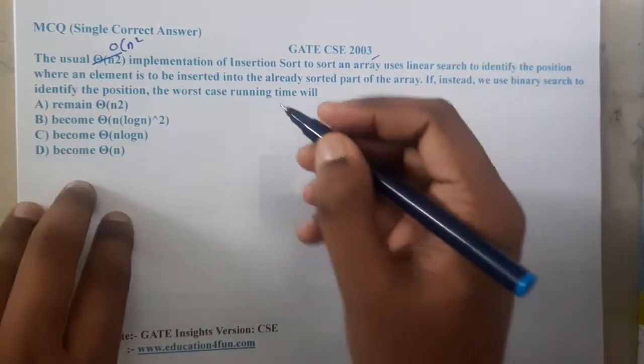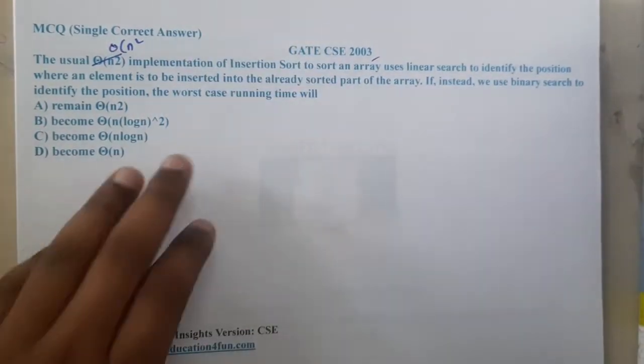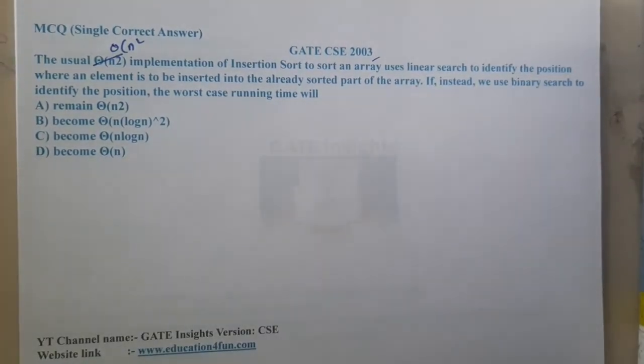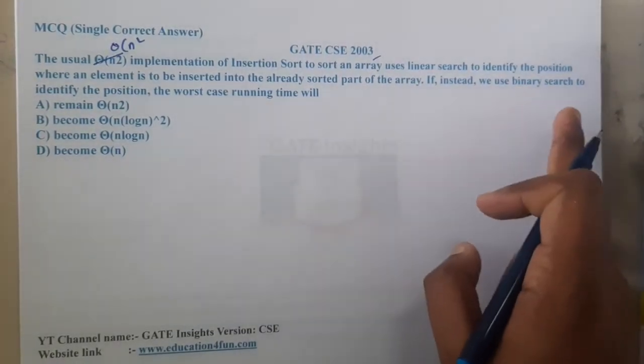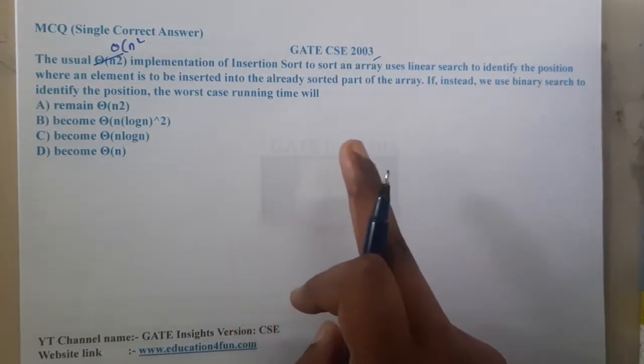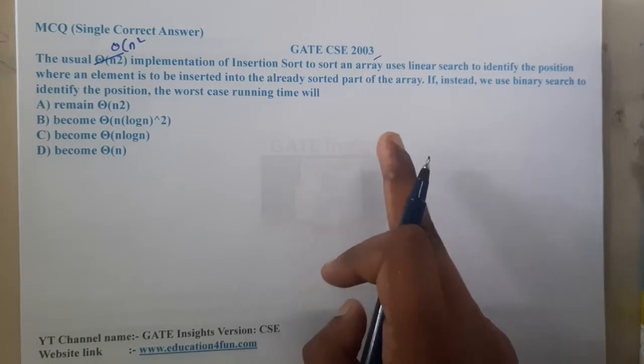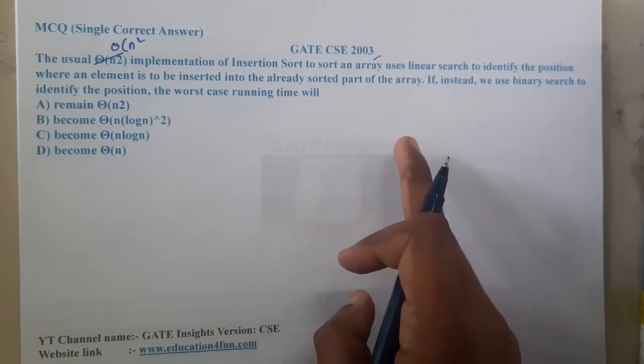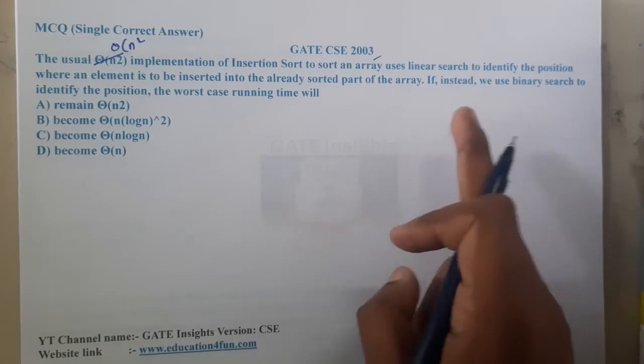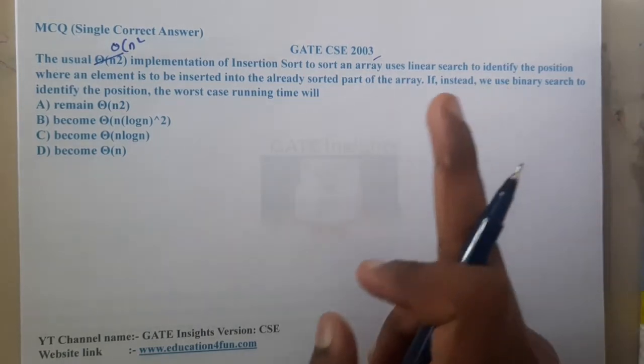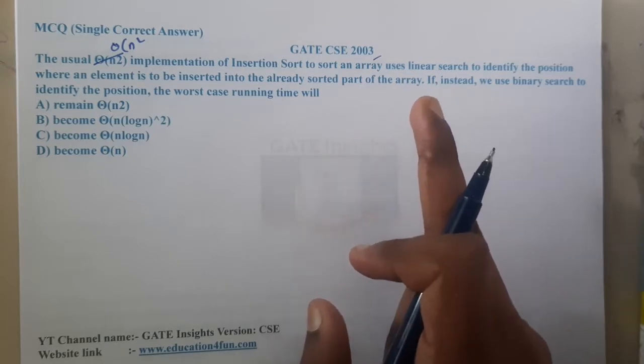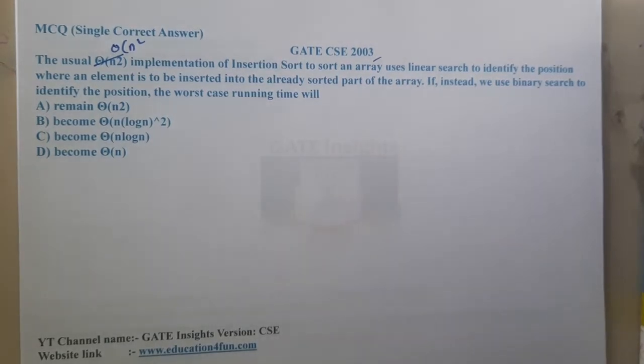So the usual theta of n square implementation of insertion sort to sort an array uses linear search to identify the position where an element is to be inserted into the already sorted part of the array. If instead, we use binary search to identify the position, the worst case complexity will run up to...